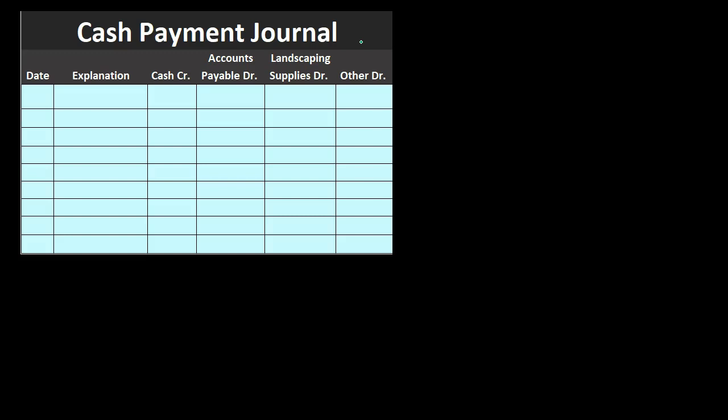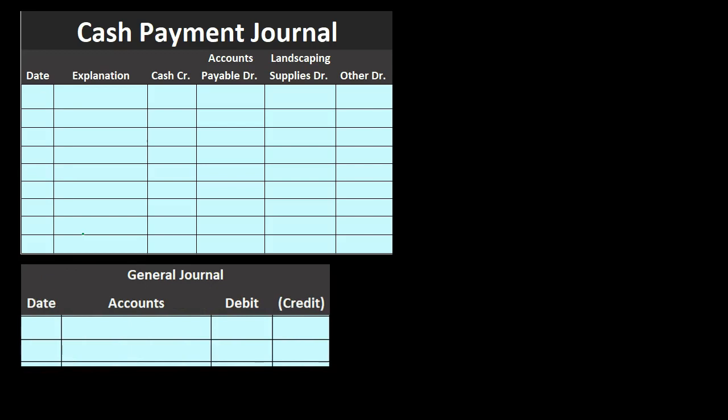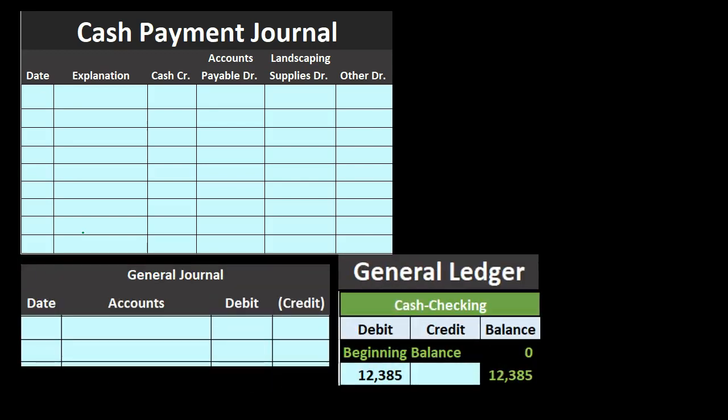Finally we have the cash payments journal. Same kind of story — we group all transactions where cash goes out of the company. It's a bit more complex because we could be paying for many different things. Cash payments are probably the most diverse type among our journals. It works best when cash payments are going for something in particular most of the time, such as buying supplies, merchandise, or paying off accounts payable. We'll enter this information into the cash payments journal each time we pay cash, then take the totals and record that to the general journal.